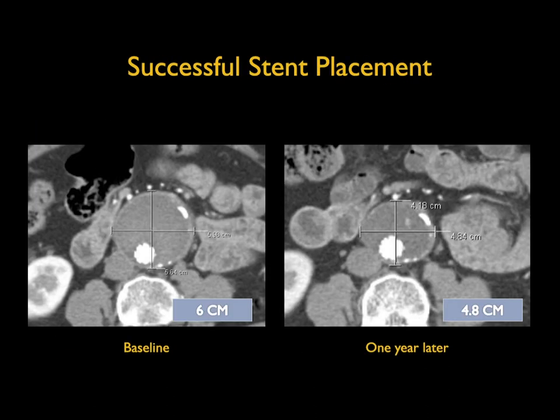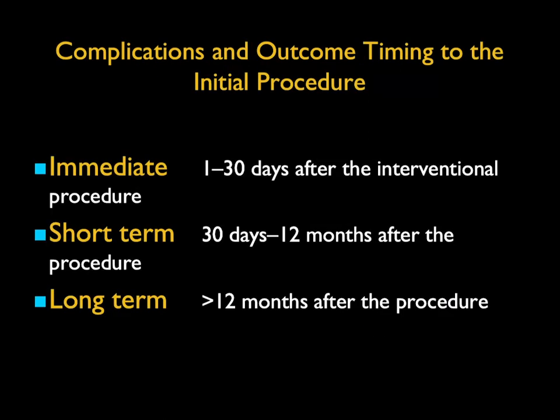Here's a good example of a successful stent placement. You see baseline, and one year later the aneurysm has decreased in size by approximately one centimeter — from 6 to 4.8 cm. When we look at stent placement complications, we talk about three timings: immediate is under 30 days, short-term is 30 days to 12 months, and long-term is over 12 months. So when you say short-term, it's not a couple of days — it's a month to 12 months out.